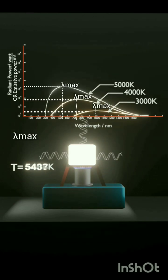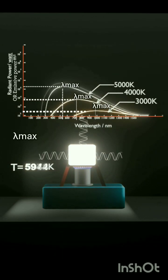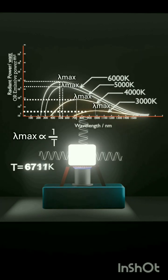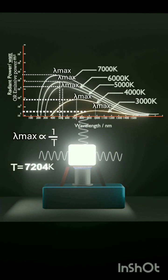The wavelength for which the emissive power is maximum is called lambda max, and it is inversely proportional to absolute temperature. Lambda max is the wavelength that has the most energy.